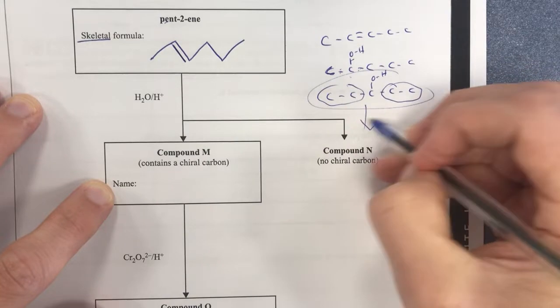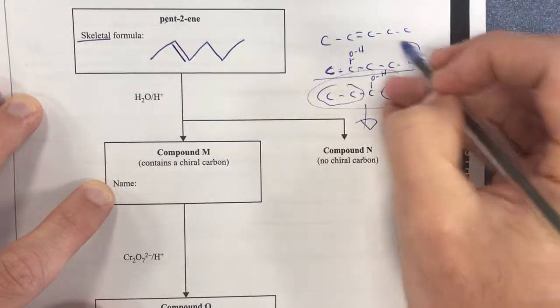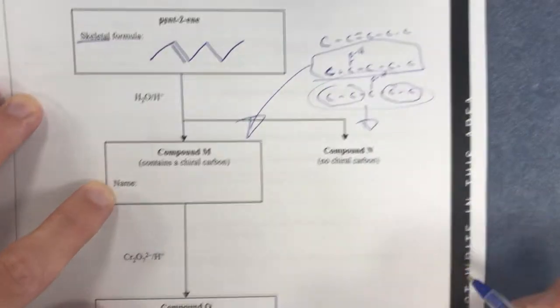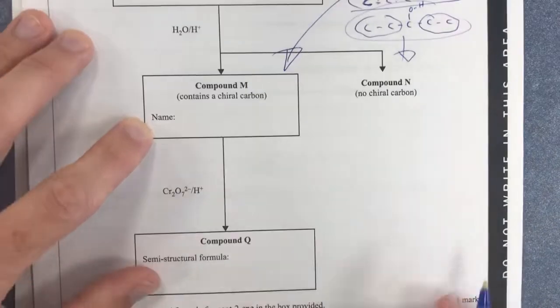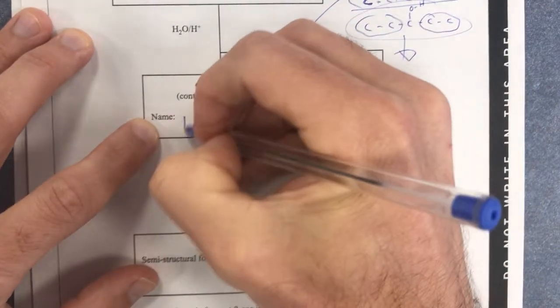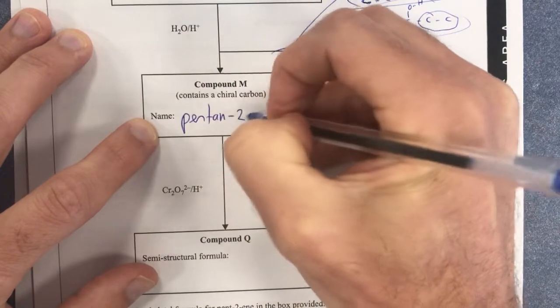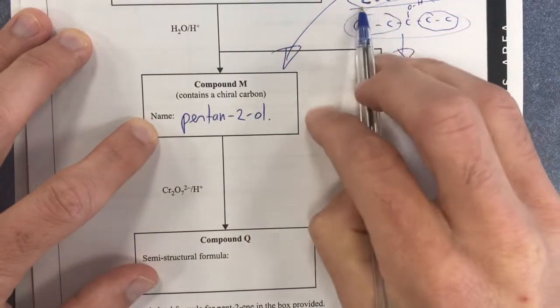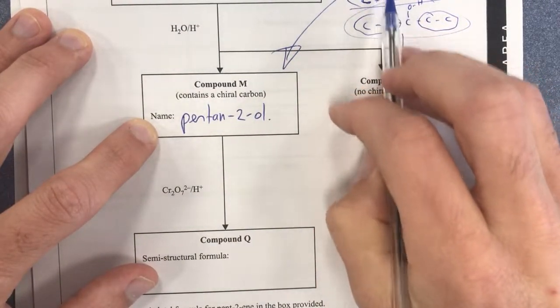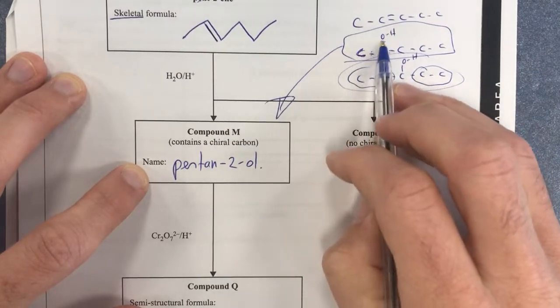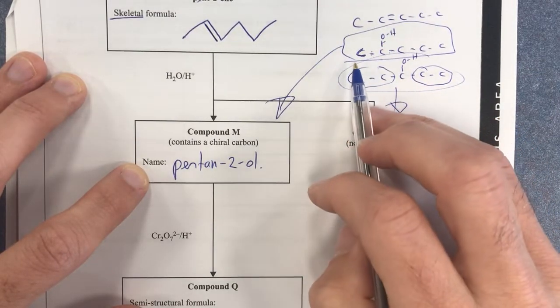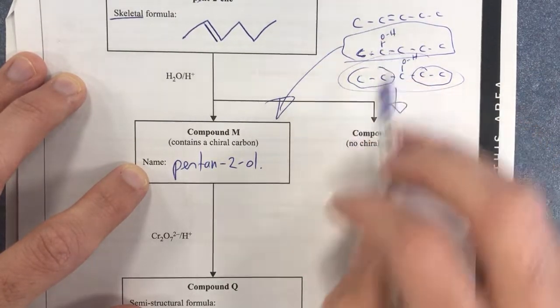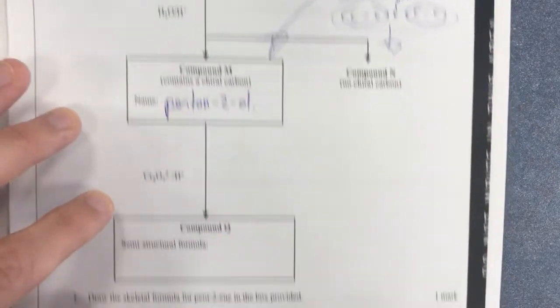So therefore, this guy will be compound N and therefore, this guy will be compound M. So what's the name of this? It's going to be pent-2-OH because we need to make sure we know where the alcohol functional group is, so the hydroxyl functional group is. So pentan-2-OH is there.